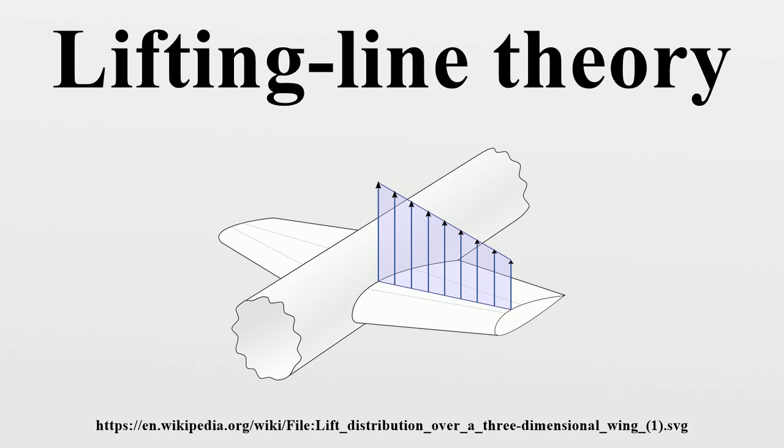The Lifting Line Theory applies the concept of circulation and the Kutta-Joukowski theorem, so that instead of the lift distribution function, the unknown effectively becomes the distribution of circulation over the span. Modeling the local lift with the local circulation allows us to account for the influence of one section over its neighbors. Any span-wise change in lift is equivalent to a span-wise change of circulation.